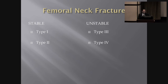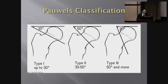Femoral neck fractures are divided into stable and unstable, going back to the Garden classification. Garden types 1 and 2 are stable — they're likely to hold alignment and just need reinforcement. For unstable fractures, you have to decide how to fix them depending on the patient population. Pauwels' classification is another tool that defines the fracture line and provides insight into outcomes. As you go from left to right, the fracture pattern becomes more vertical, associated with higher energy and a higher risk of avascular necrosis.